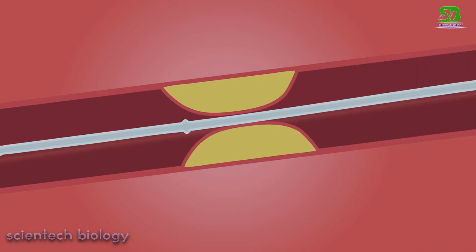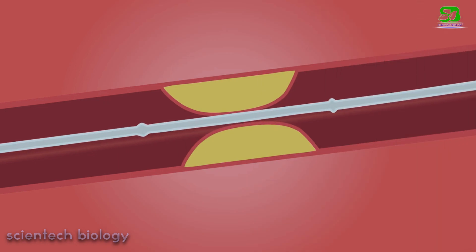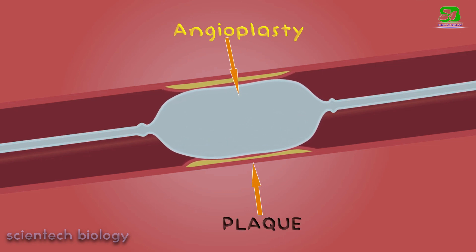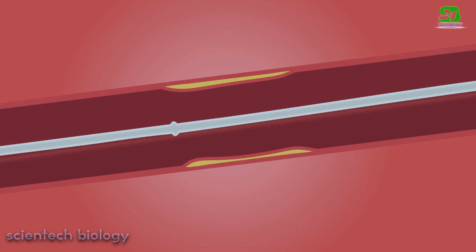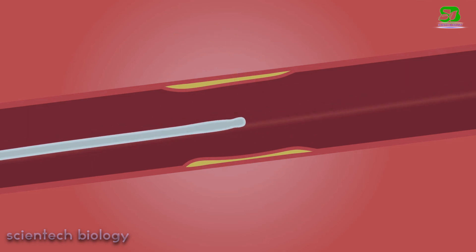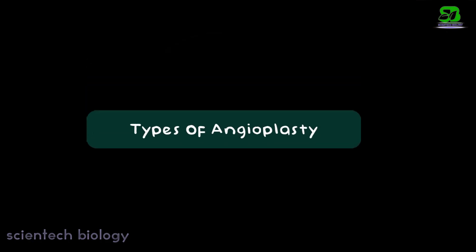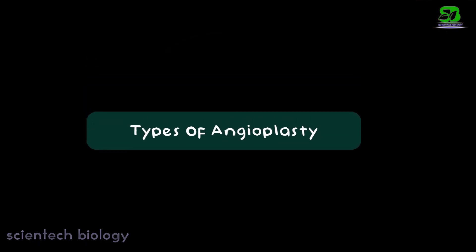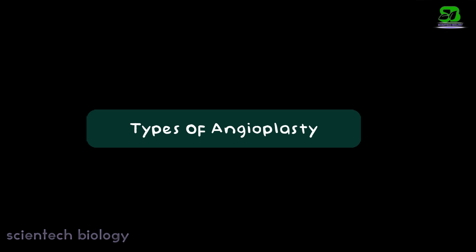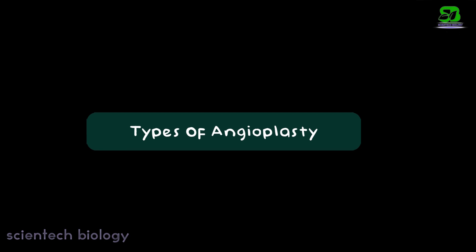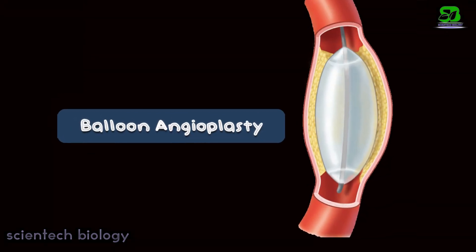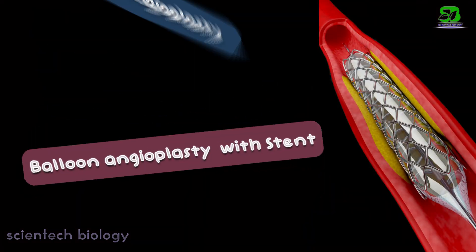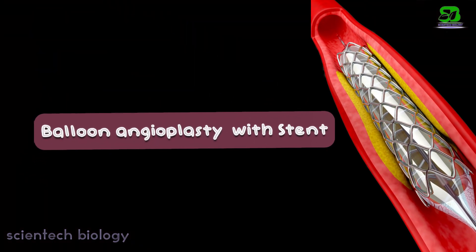To open the blockage or to remove the fatty cholesterol plaque from the coronary artery, angioplasty is used. The cardiologist suggests three types of angioplasty on the basis of location and shape of the blockage or plaque in the heart: balloon angioplasty, balloon angioplasty with stent insertion, and laser angioplasty.